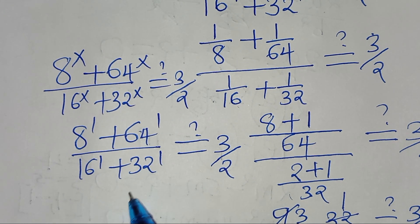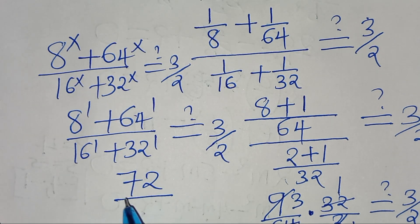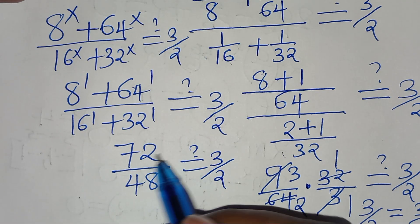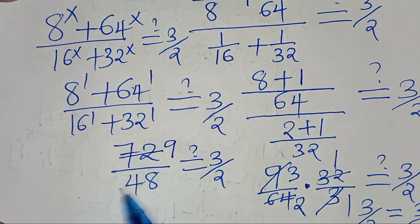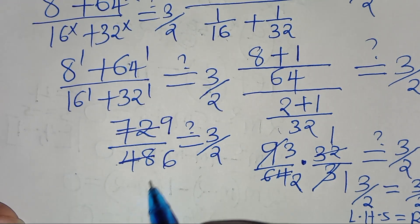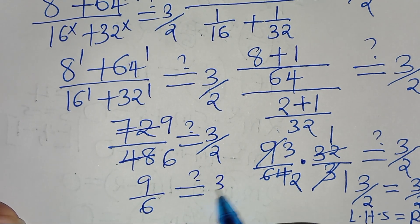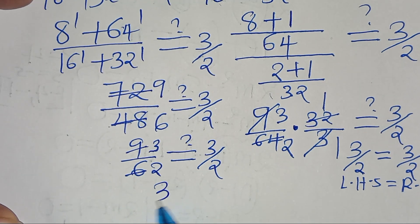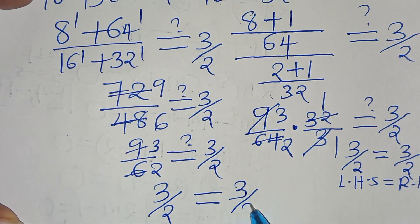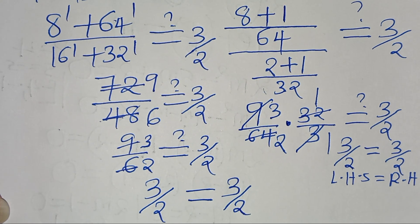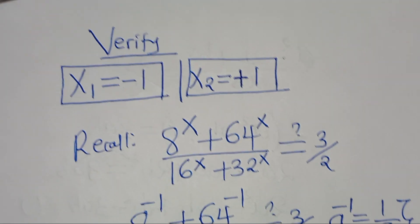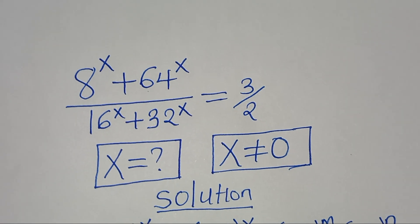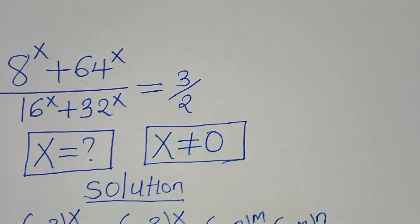So this is 64 plus 8, which equals 72, divided by 16 plus 32, which is 48. This should give a value of 3 over 2. So 72 divided by 48: we can simplify by dividing both by 24, giving 3 over 2 on the left side equal to 3 over 2 on the right side. This clearly shows that both x₁ and x₂ satisfy the equation. Please like this video and subscribe — see you in the next video!